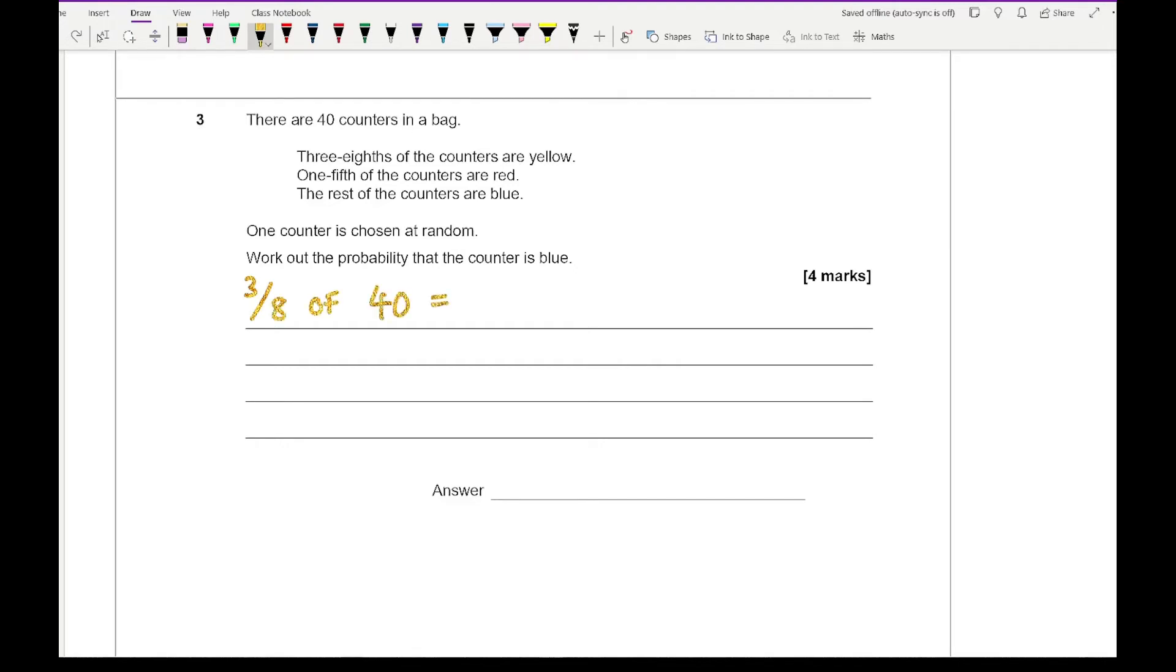How do we do that? We do 40 divided by 8 multiplied by 3. Well 40 divided by 8 is 5 and 5 times 3 is 15, so there are 15 yellow counters. Next one says one fifth, so we work out one fifth of 40. That's 40 divided by 5 multiplied by 1 which is 8. It says the rest are blue, so to work out the rest I do 40 minus 15 minus 8 which gives me 17. So the probability is 17 over 40.